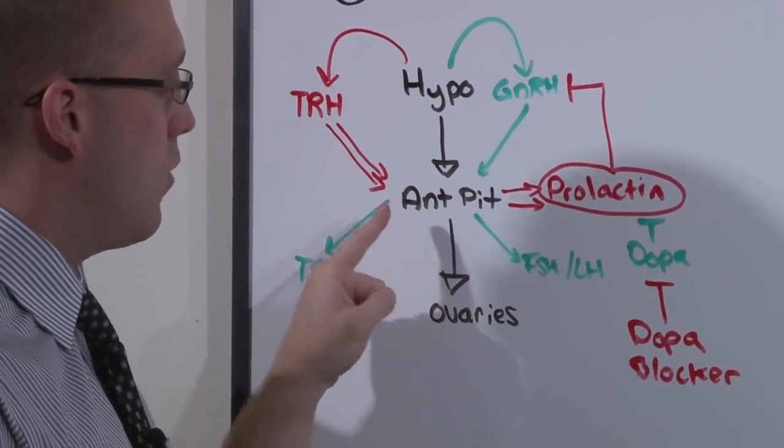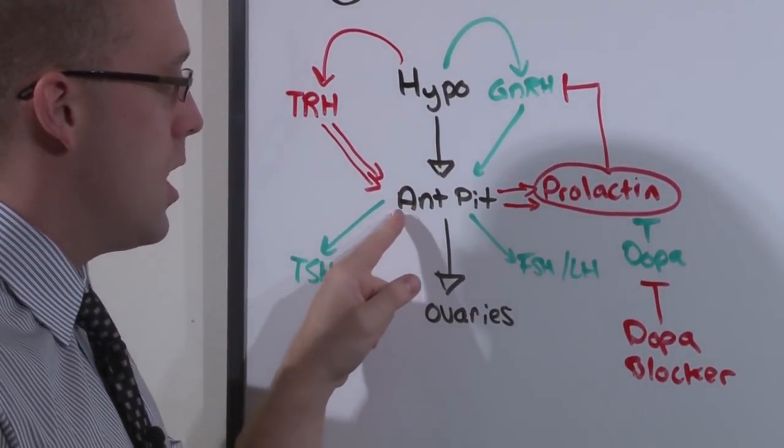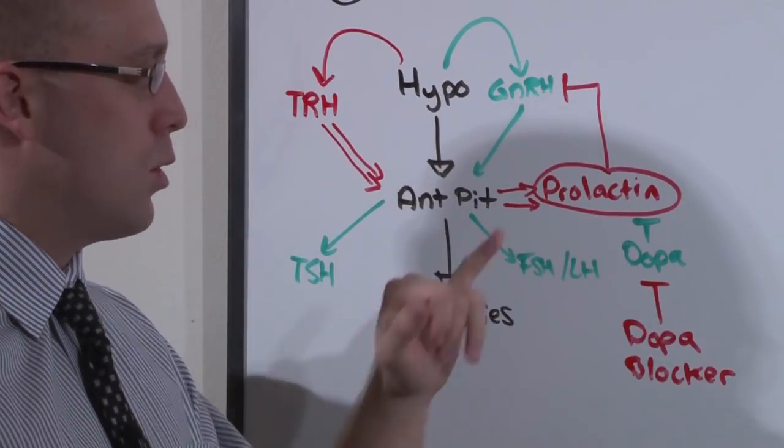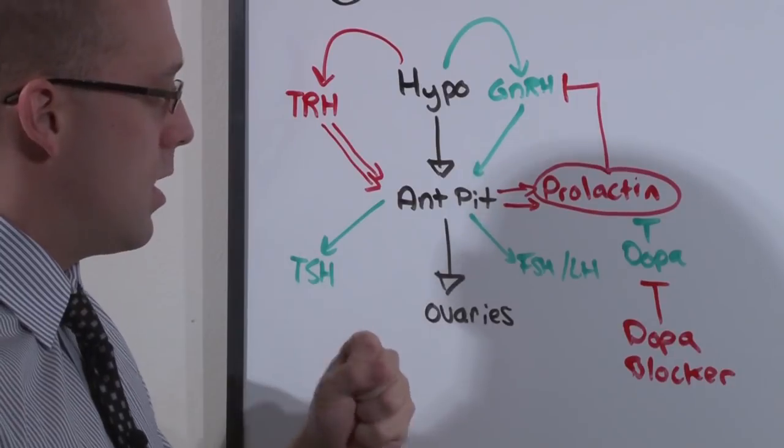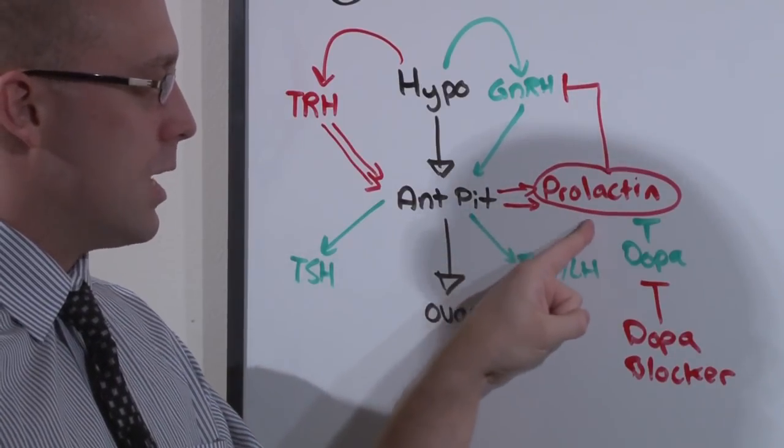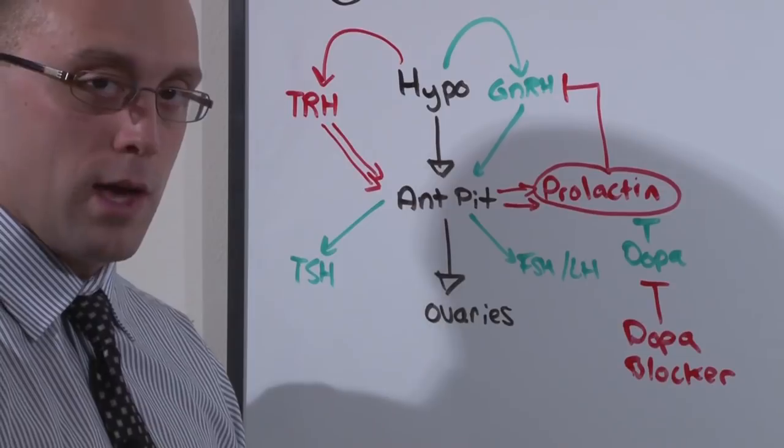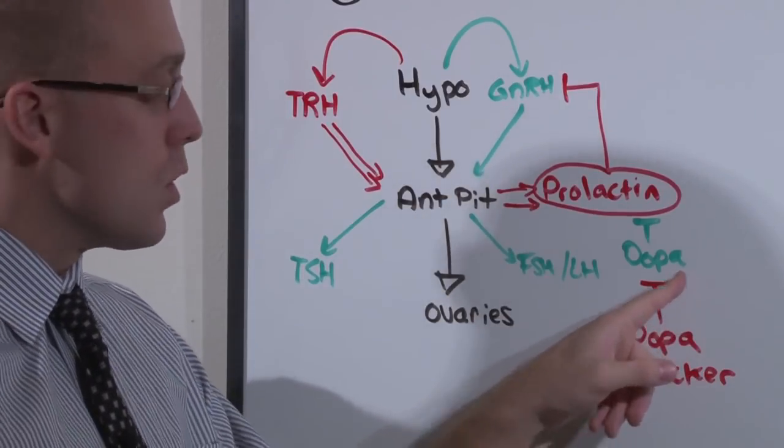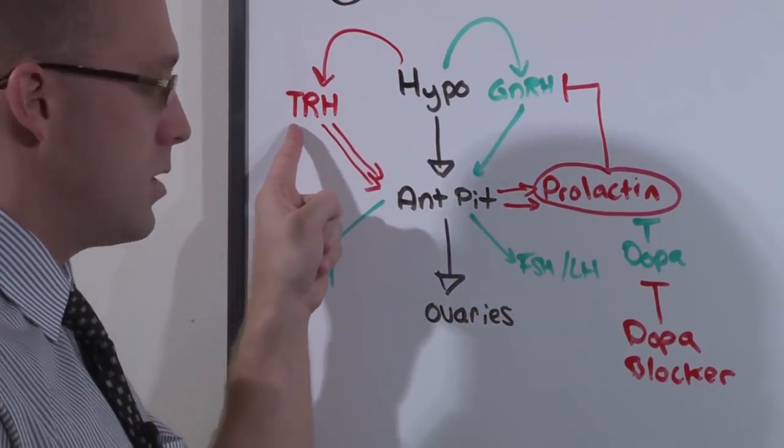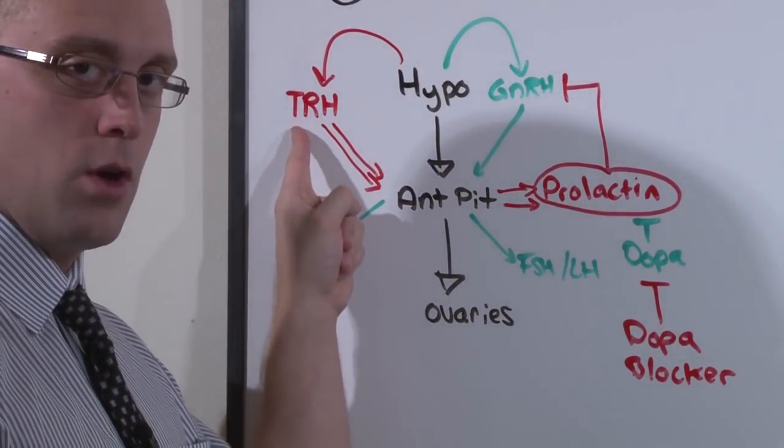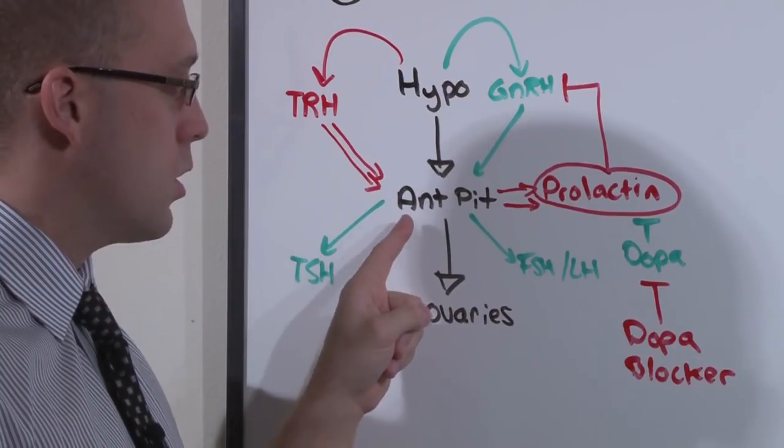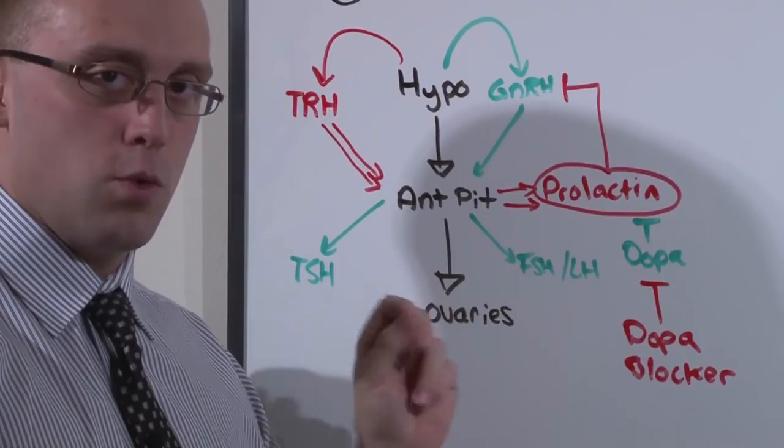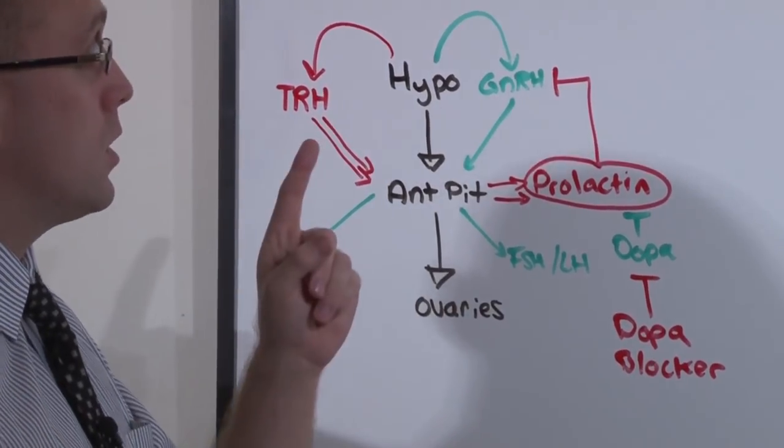And finally, you can just have a tumor of the anterior pituitary that makes too much prolactin. A prolactinoma autonomously secretes prolactin. So let's just say it again. If you have elevated levels of prolactin, you shut off the axis. The three ways you can do that is by putting someone on a medication that blocks dopamine. Simply have a hypothyroid state and elevated TRH drives prolactin production. Or you can have an autonomously secreting tumor of the anterior pituitary that is secreting prolactin. Those are the ways you're going to get secondary amenorrhea from the most common causes.